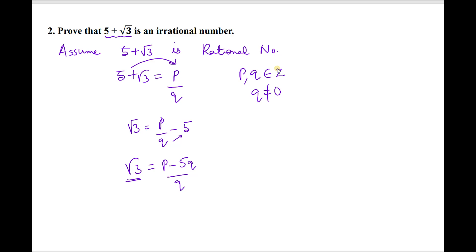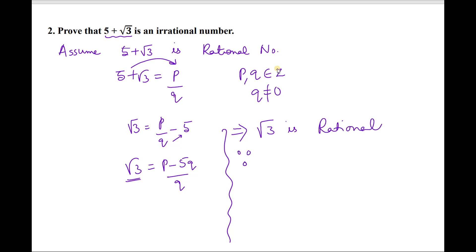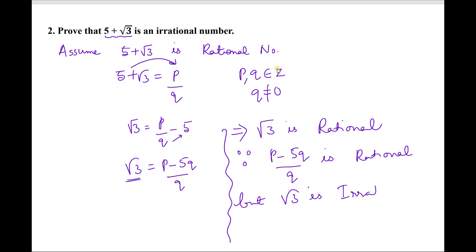Now we can see here: we know that √3 is irrational. But what we got on the right-hand side is a rational expression. This implies that √3 is rational, because (P − 5Q)/Q is rational. But √3 is irrational. Therefore our assumption is wrong.